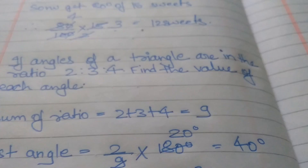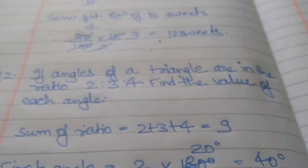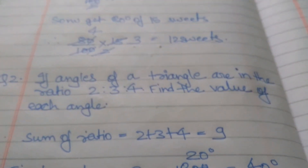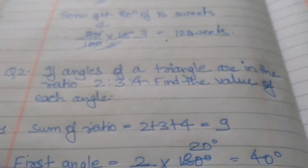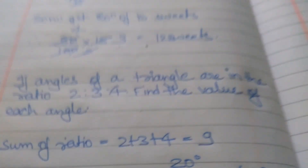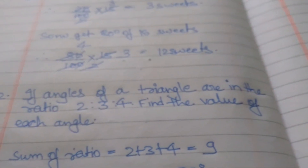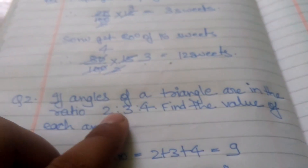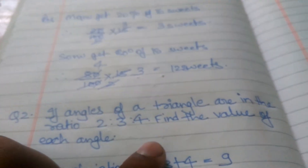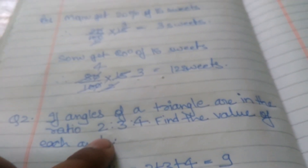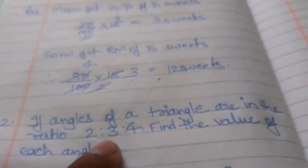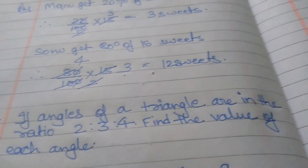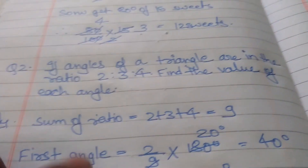Sonu gets 80% of 15 items. The second question is: if the angles of a triangle are in ratio 2 ratio 3 ratio 4, find the values of each angle. The triangle has three angles and the sum of three angles is 180 degrees. The ratio is 2:3:4, which means the first is 2 of 180, the second is 3 of 180, and the third is 4 of 180.